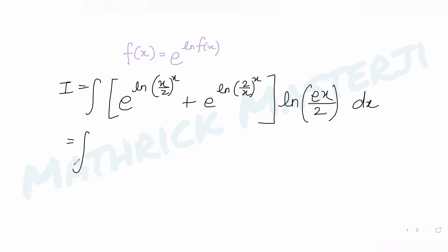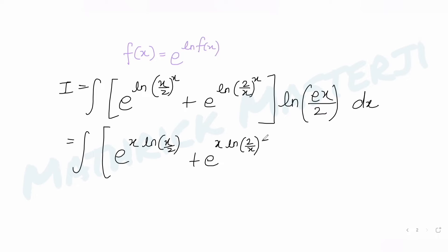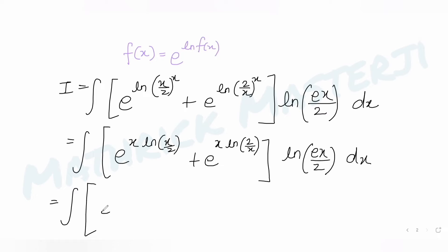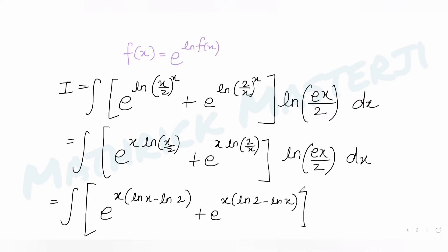Since log(a^b) = b·log(a), I rewrite the exponents. Using log(a/b) = log a − log b, I expand: e raised to x·log x minus x·log 2, plus e raised to x·log 2 minus x·log x, multiplied by log(ex/2) to the base e, dx.